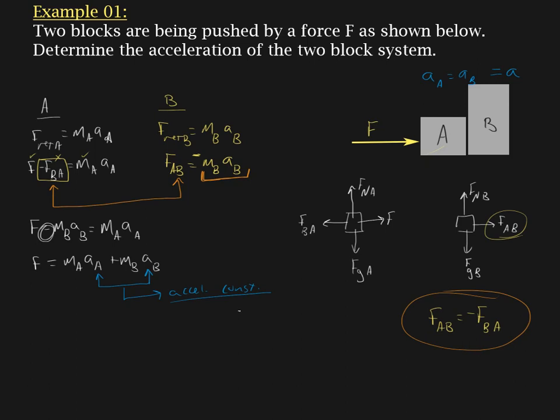All right, so let's finish up this problem now. We can simplify things because we can factor out the acceleration. So we get m_A plus m_B times a. So we have F over m_A plus m_B equals the acceleration. And this is the answer that we're looking for.